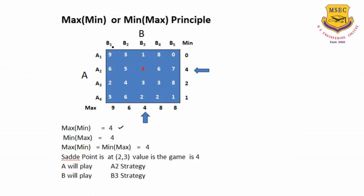Now let's see B: when he is playing B1 strategy, what is the maximum loss that he is going to incur? It is 9. What is the maximum loss when he is playing B2 strategy? It is 6. Similarly, 4, 8 and 8 are the maximum losses. So he will not play the games having the maximum losses, but he will play the game having the minimum losses. Therefore, he will try to choose the minimum of the maximums. The minimum of the maximums is 4, so min-max equals 4.